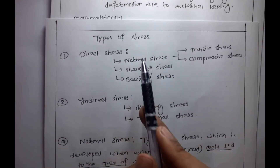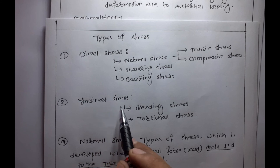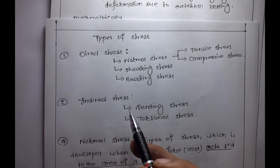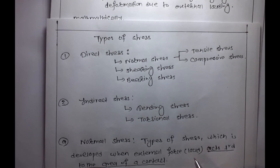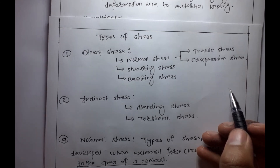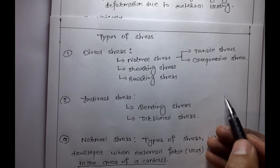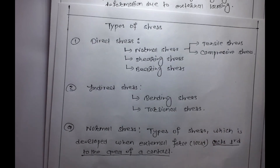Types of stress: basically, there are two categories — direct stress and indirect stress. Direct stress occurs when the load is applied directly in that direction, causing stress in that same direction.